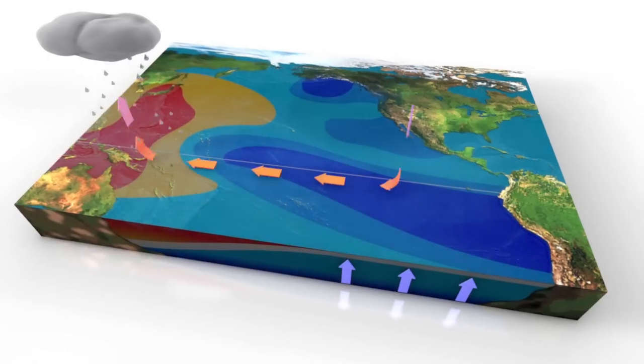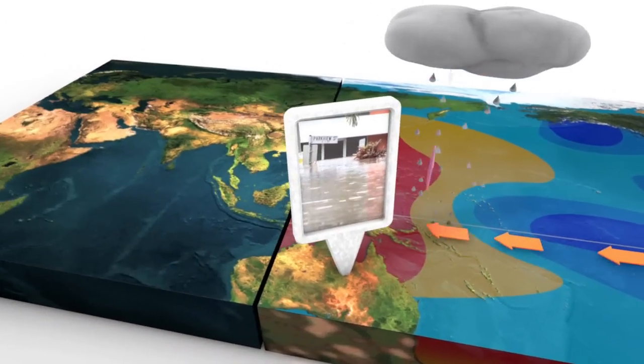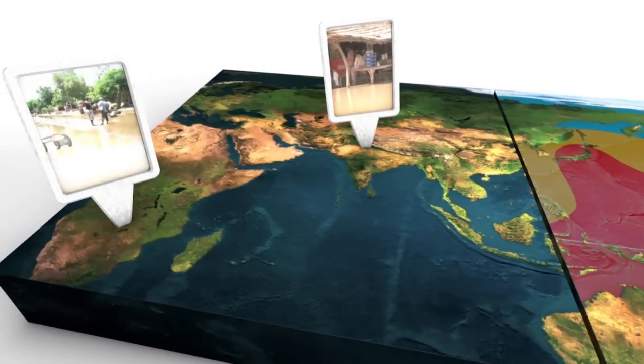Effects seen in following months include heavy rain and flooding in Australia, the Indian subcontinent, and southern Africa.